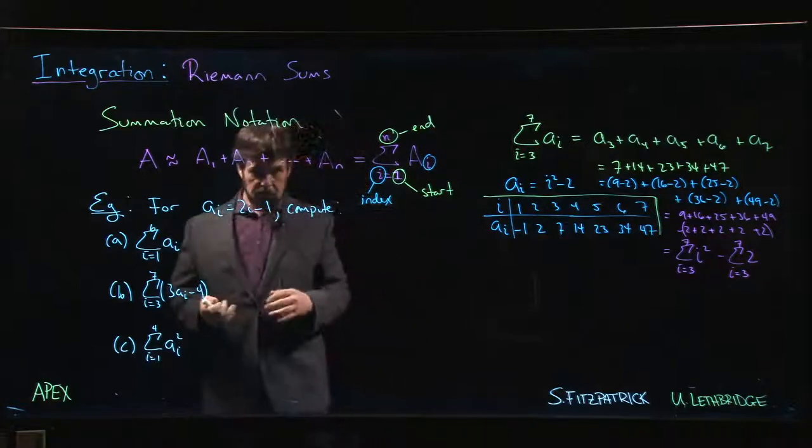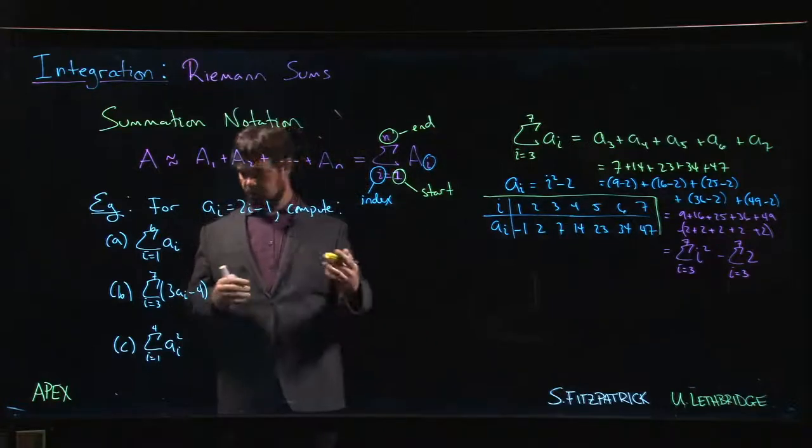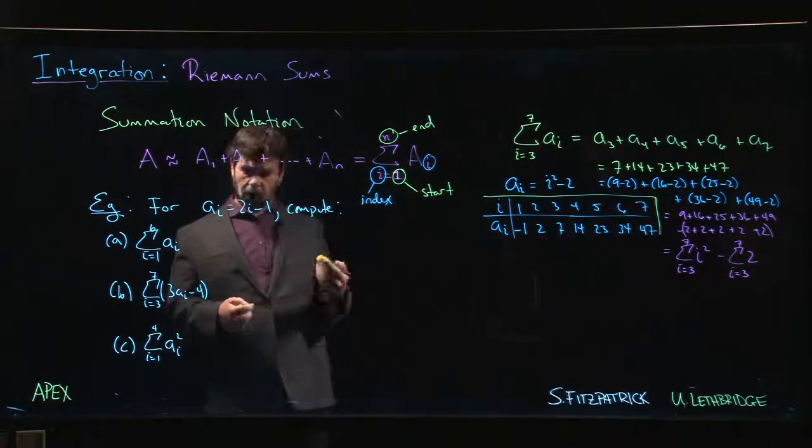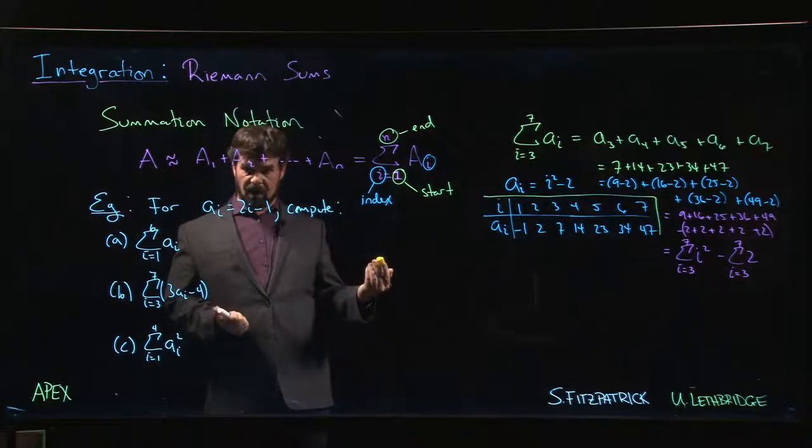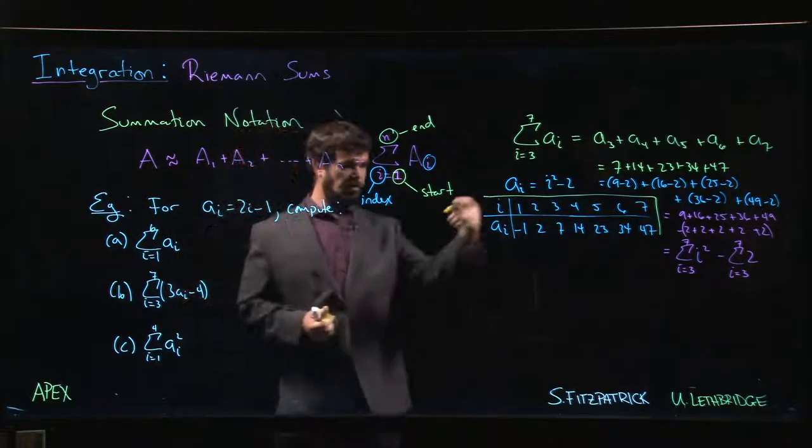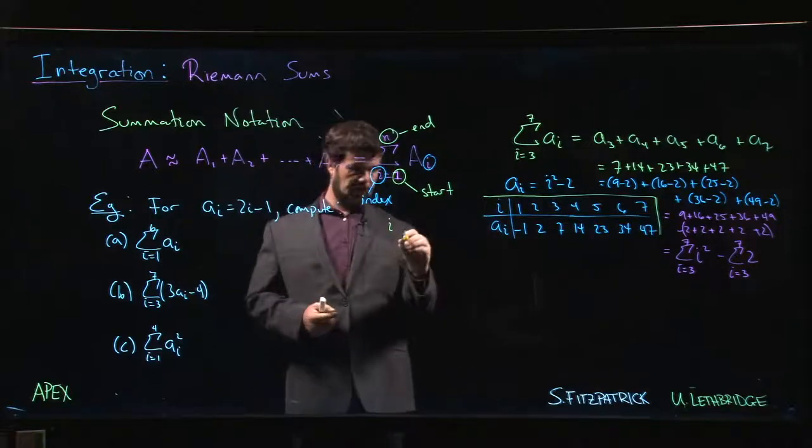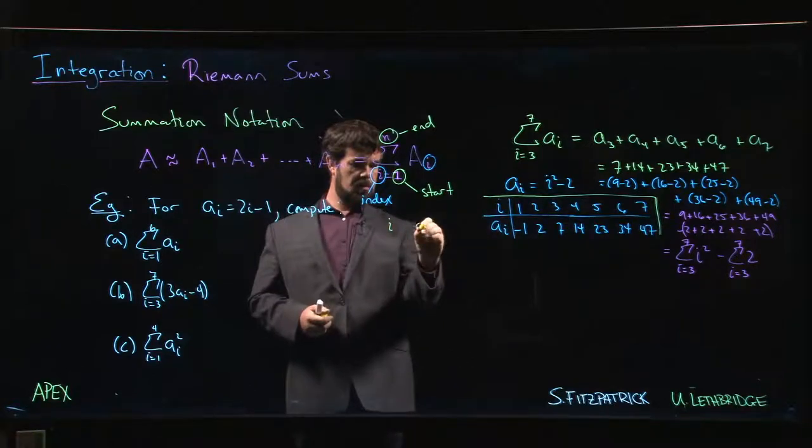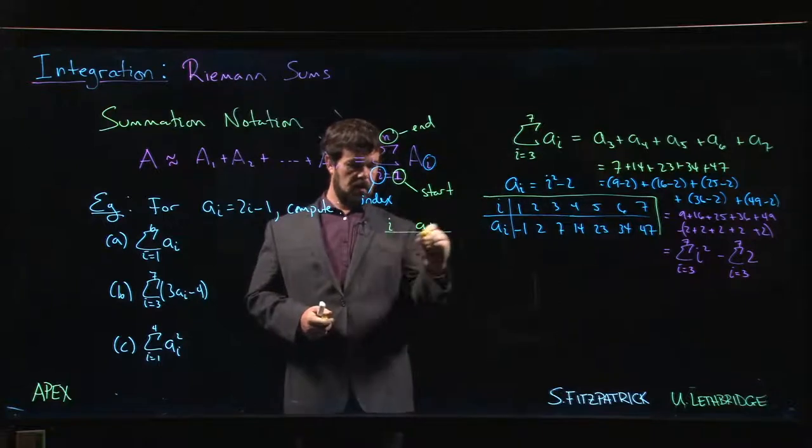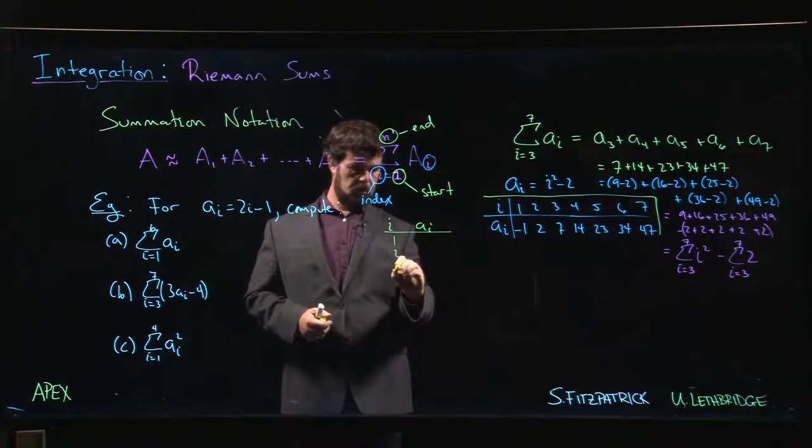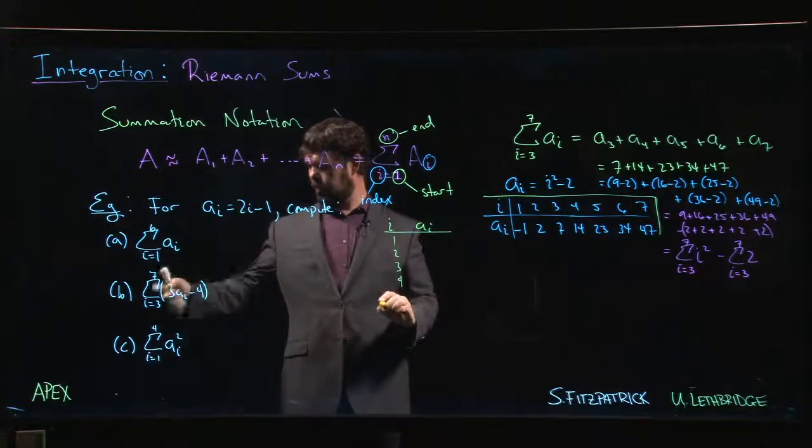Of course, at this point in the process where we haven't really learned properties yet or techniques for manipulating sums, we're still going to have to generate that list. We're still going to have to go and maybe I'll do it vertically this time. We have i, we have a_i: one, two, three, four... sevens the highest... five, six, seven.